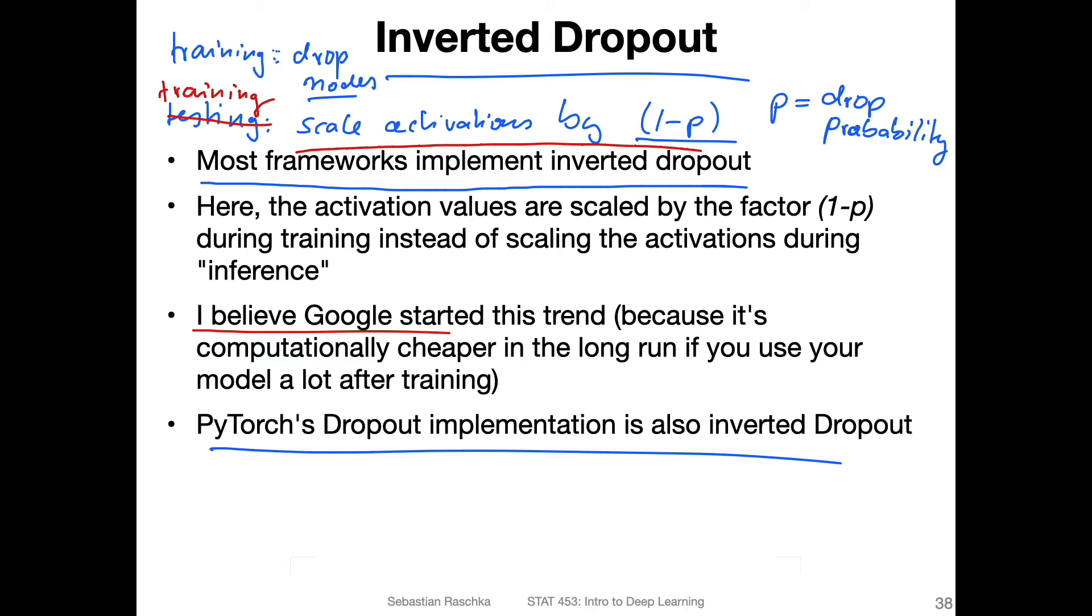In any case, both dropout or inverted dropout should give you exactly the same results. It's interesting. And it happens that most frameworks nowadays, including PyTorch, use actually inverted dropout.